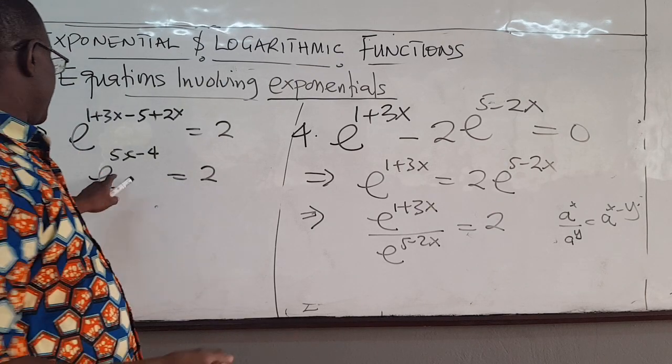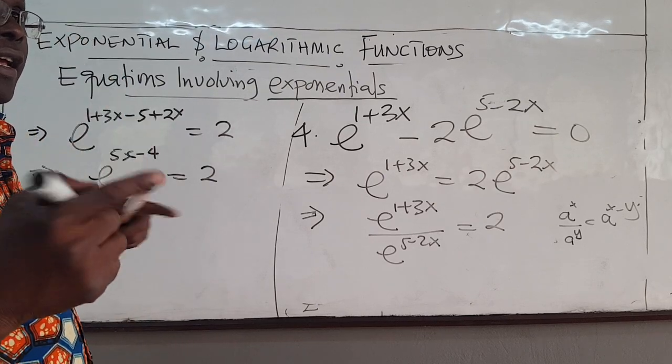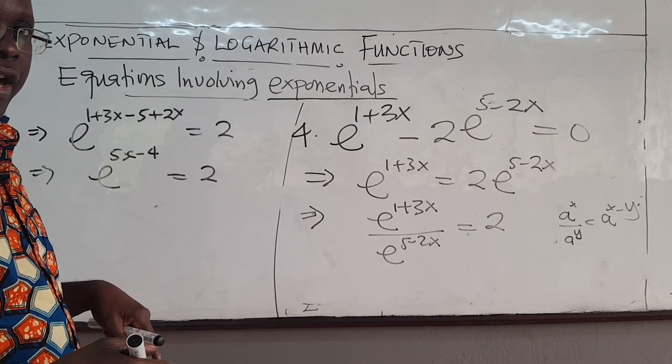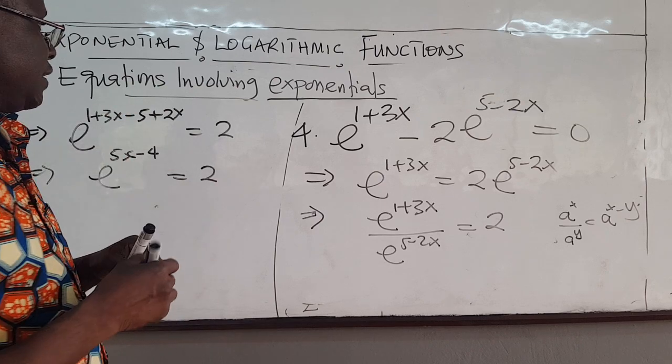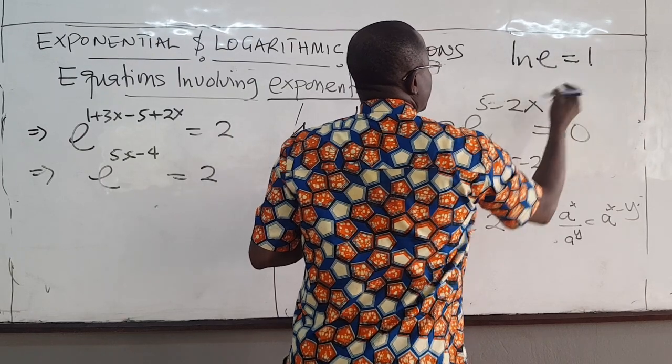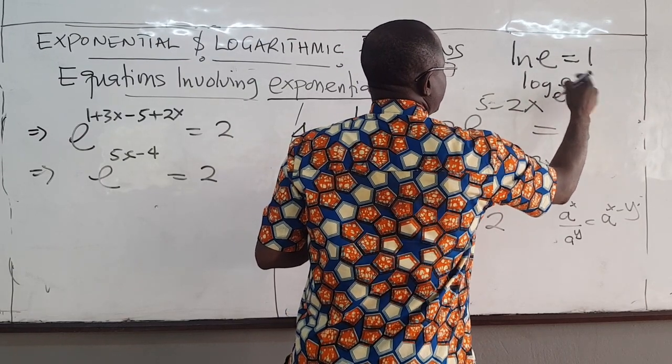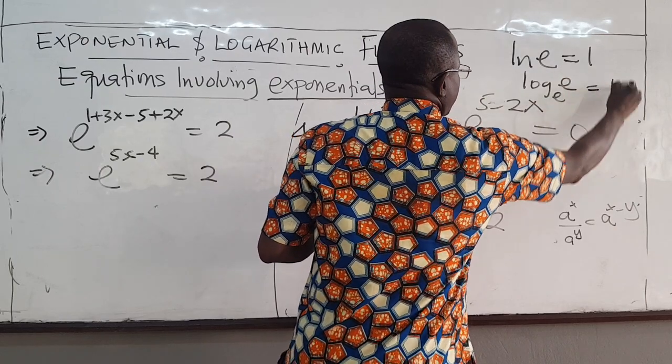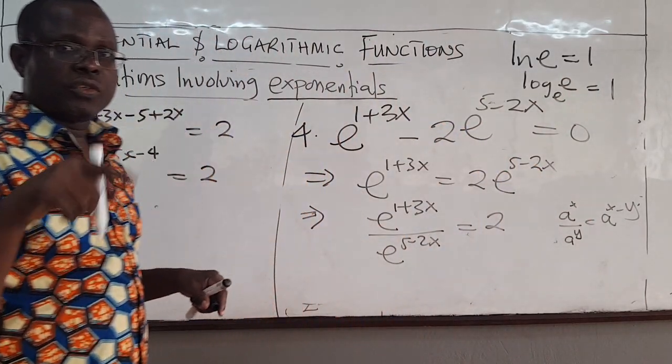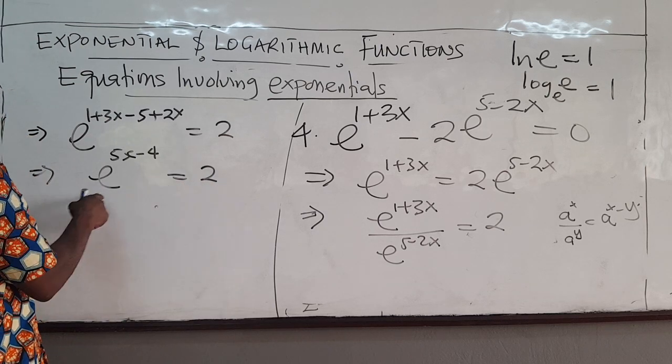Now, how do I get rid of this to get this? I can take the ln of both sides. Remember ln(e) = 1. ln(e) equals 1 because ln is the same as log base e of e. This has to equal 1. Log base e of e is 1.